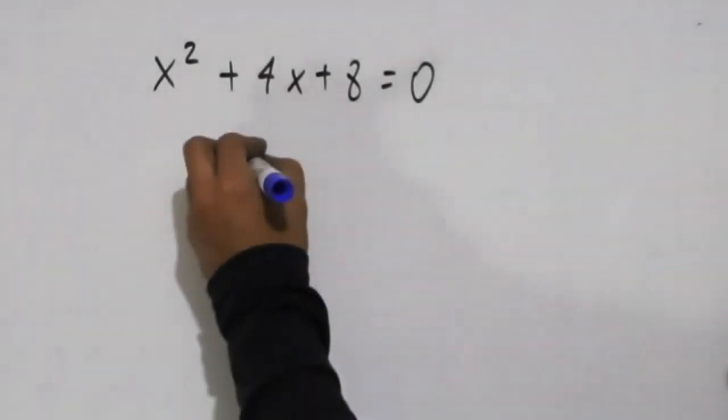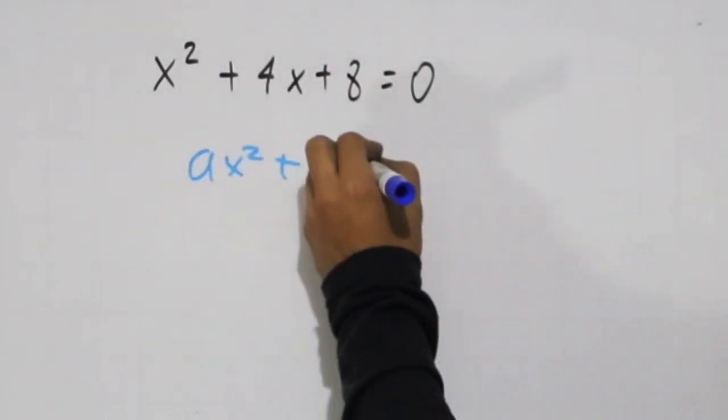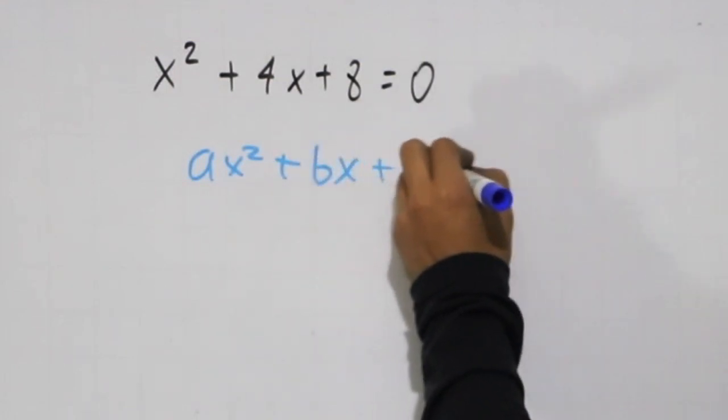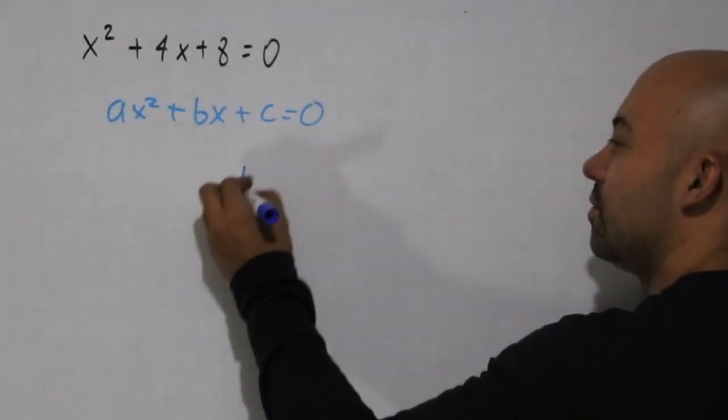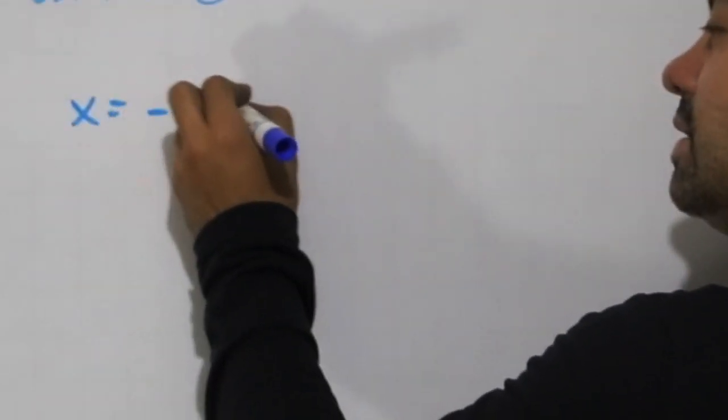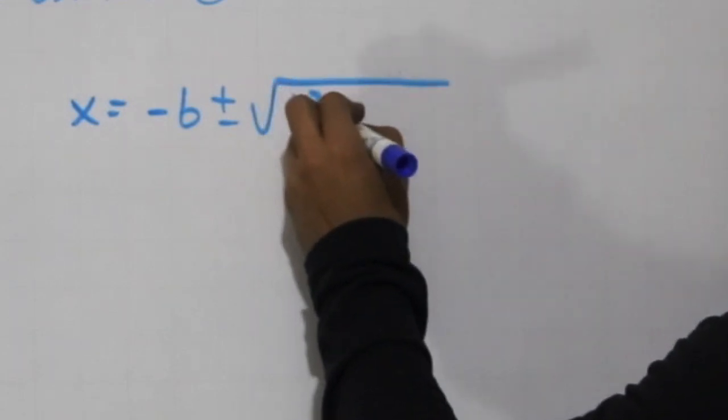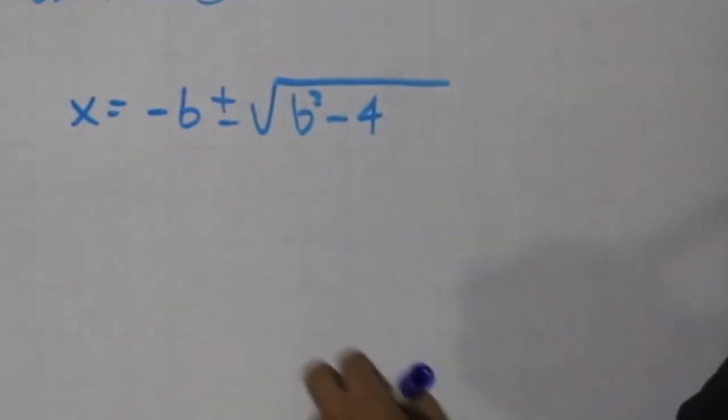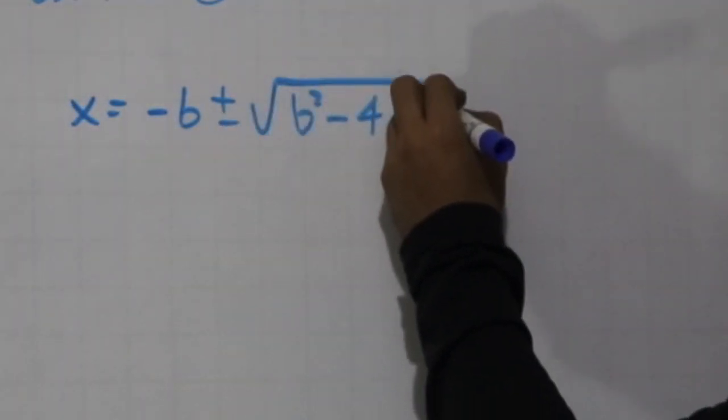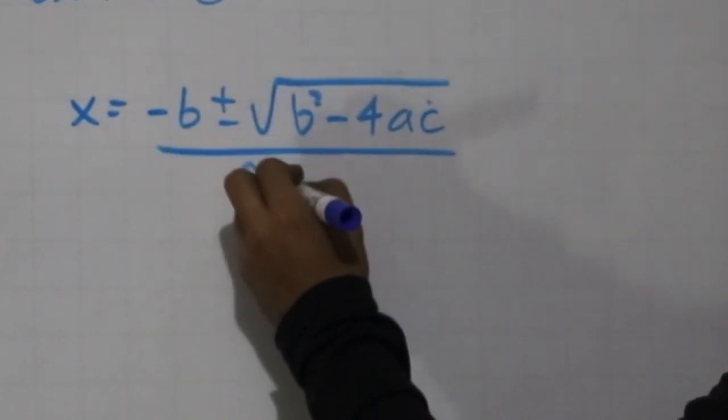Now remember, we need the equation to be in this order, okay? ax² + bx + c = 0. We're going to use the quadratic formula, and remember the quadratic formula is x = (-b ± √(b² - 4ac)) / 2a.